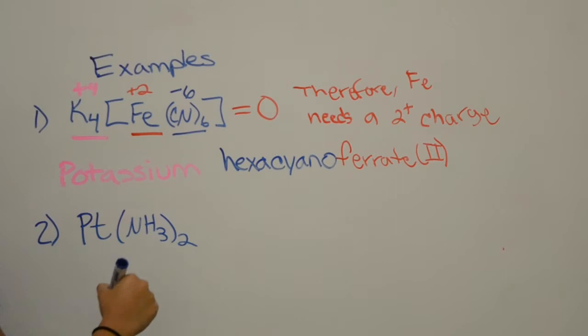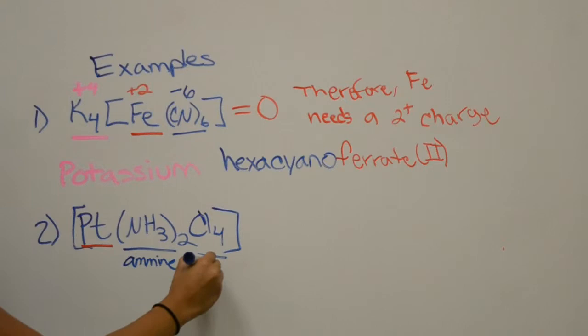For our second example, we have a metal and two ligands. We know the ligands are amine and chloro. In alphabetical order, amine will go first and chloro will go second. The subscript 2 gives amine a prefix of di, and subscript 4 gives chloro a prefix of tetra.